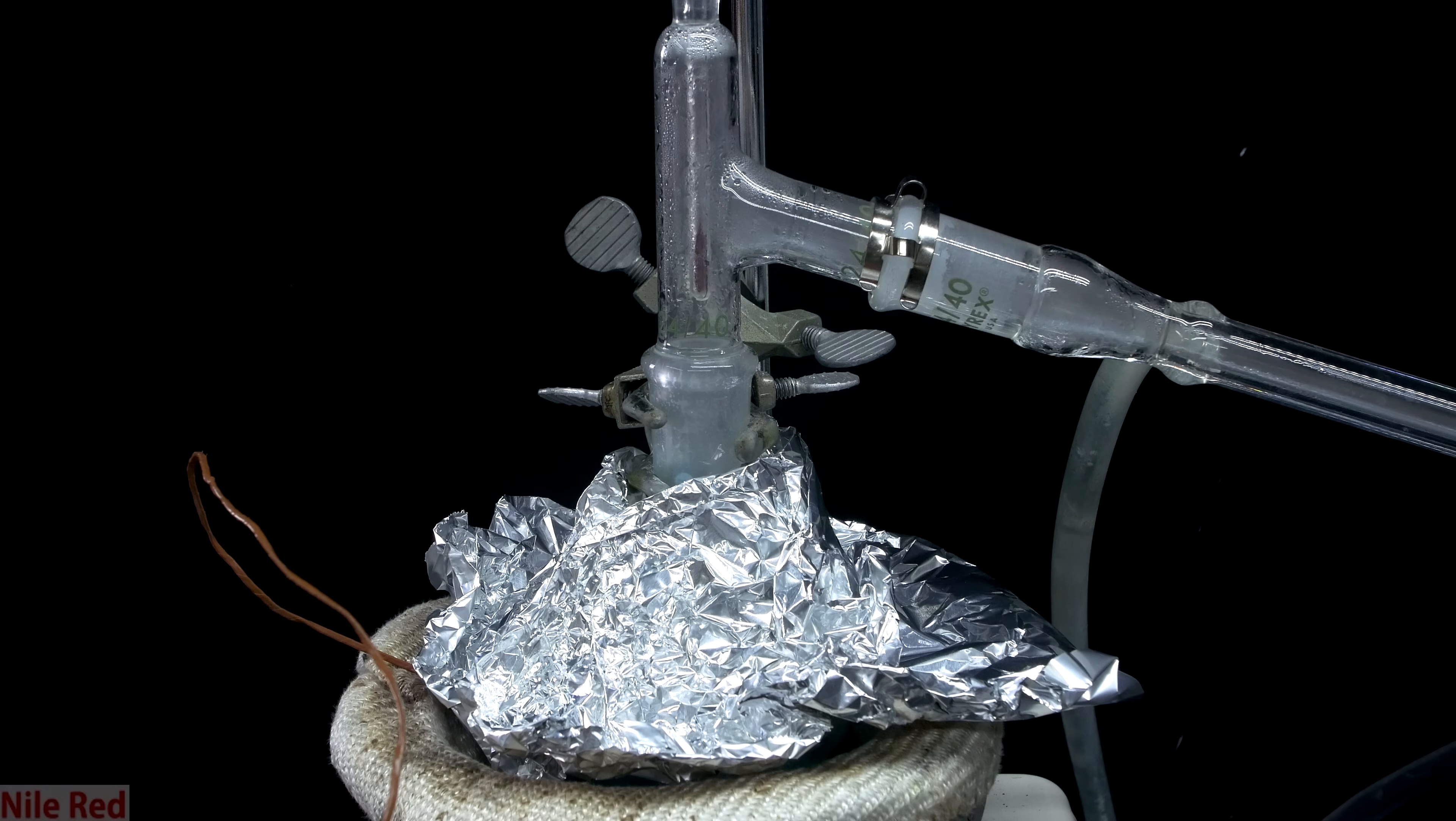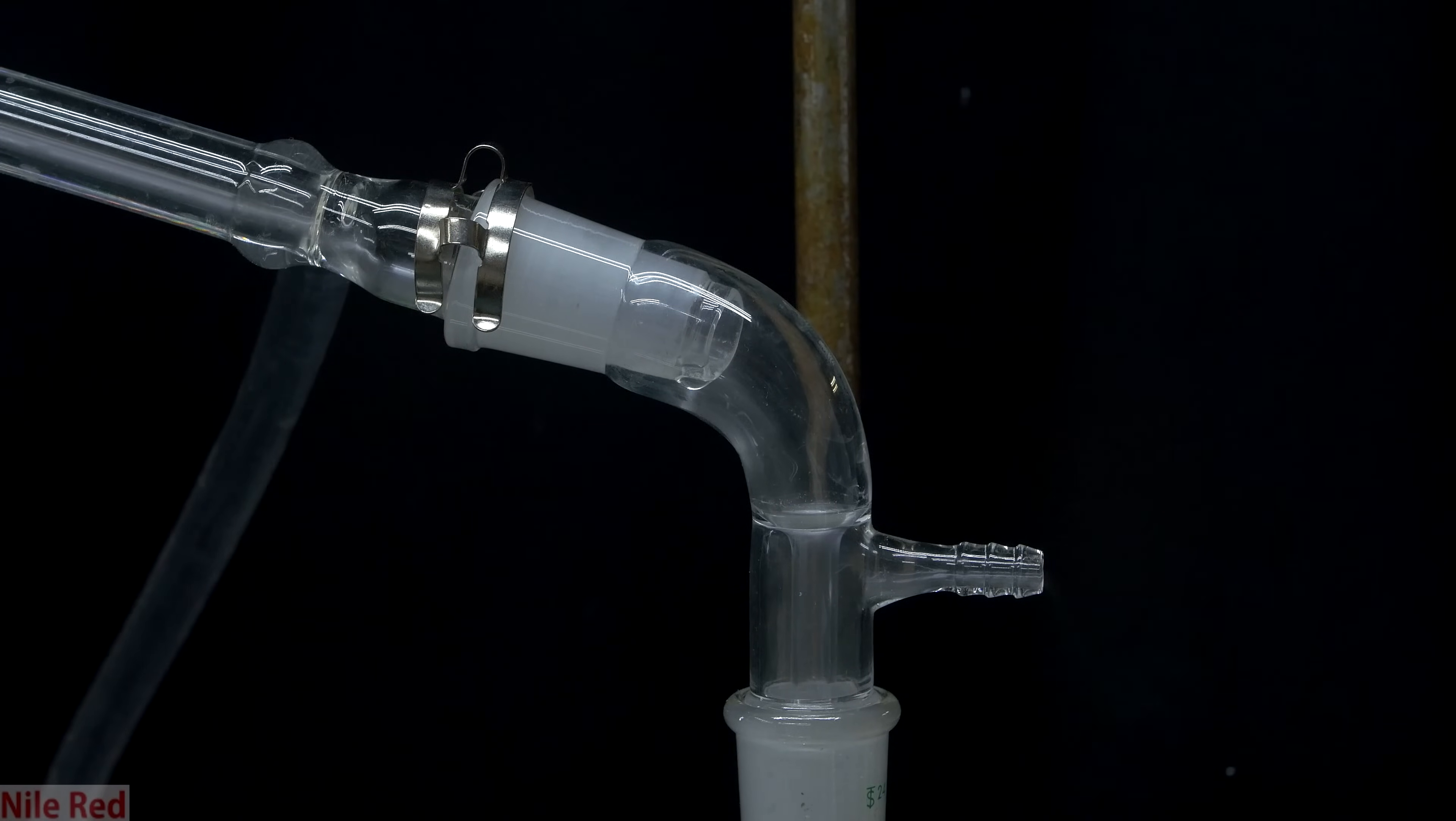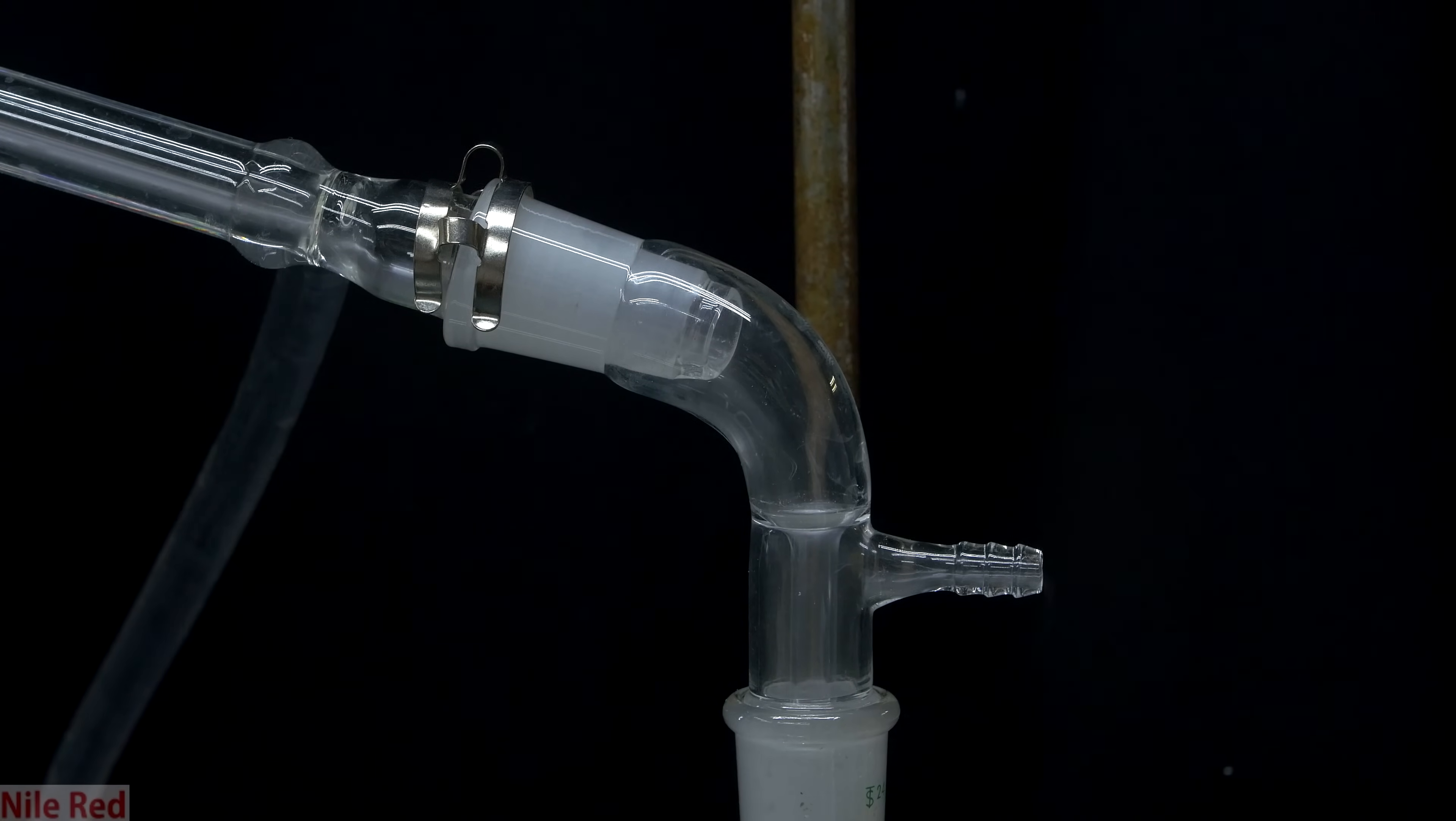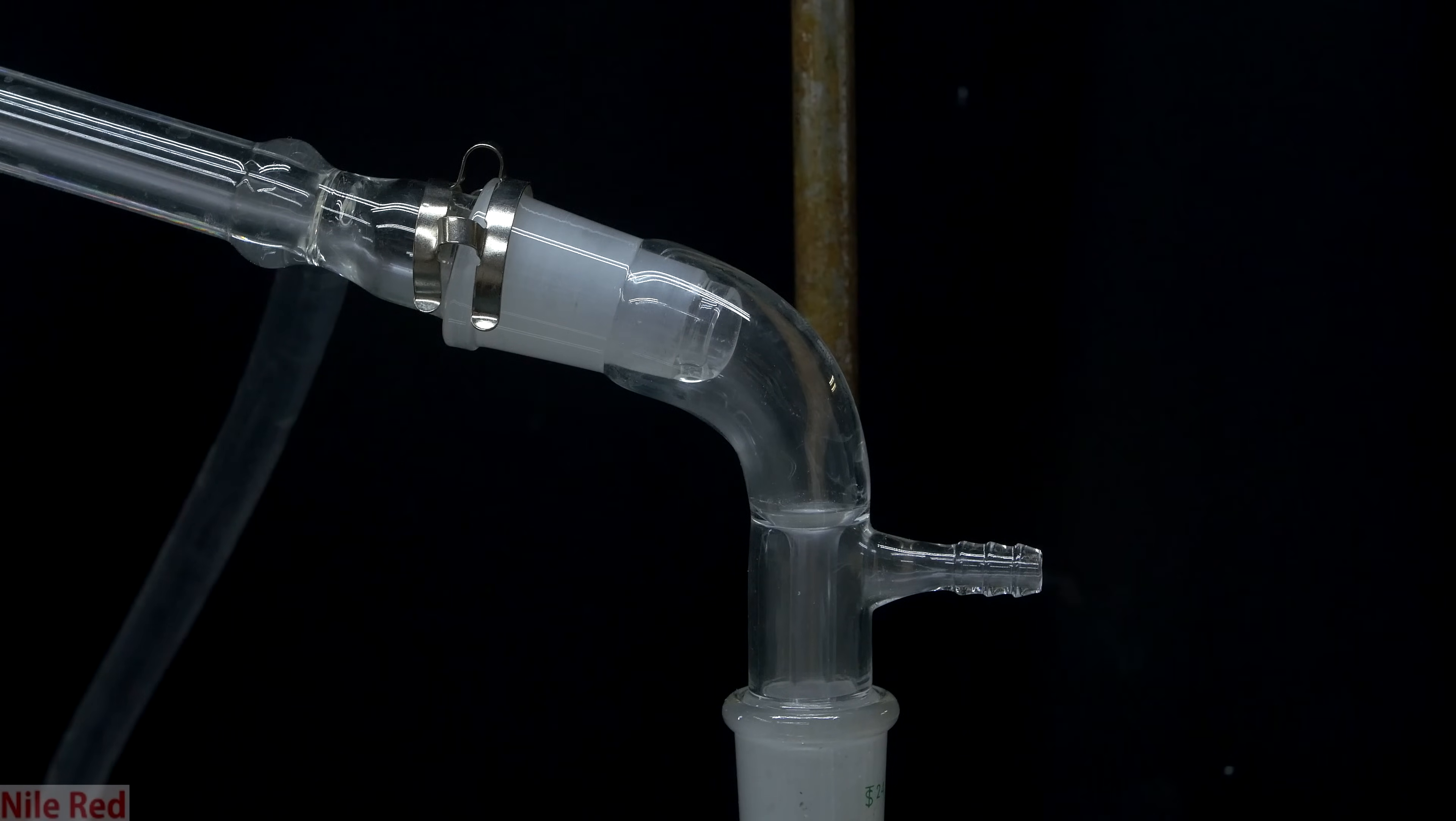When things start to get too hot, we'll start generating these white vapors, and this should be an indication to turn down the heat a little bit. The yellow color doesn't last too long, and eventually the distillate that we get appears to be pretty crystal clear. In this same shot, you'll notice that there's some white vapor coming out of the vacuum adapter, and for this reason, it's highly recommended to do this in a well-ventilated area.